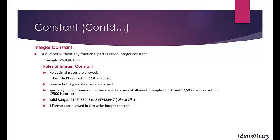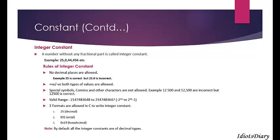Three formats are allowed in C to write integer constants: decimal (for example, 25), octal (must be prefixed with 0), and hexadecimal (must be prefixed with 0x). By default, all integer constants are treated as decimal.